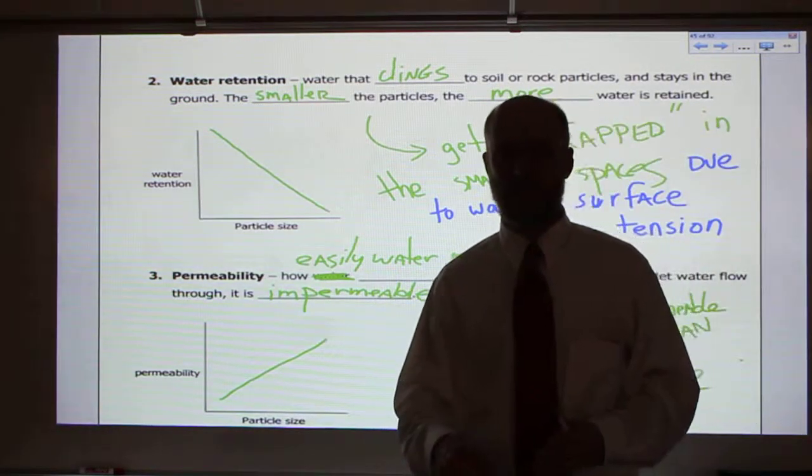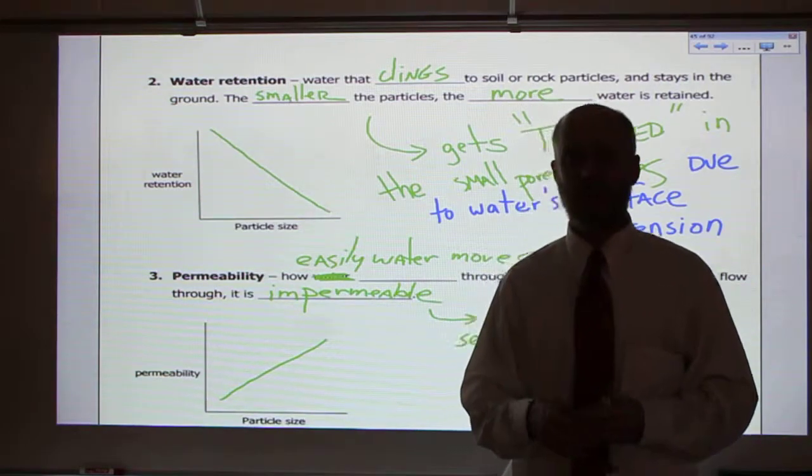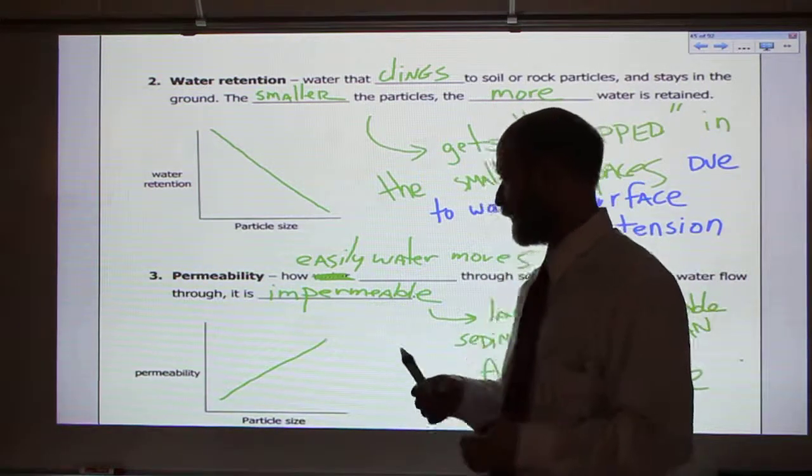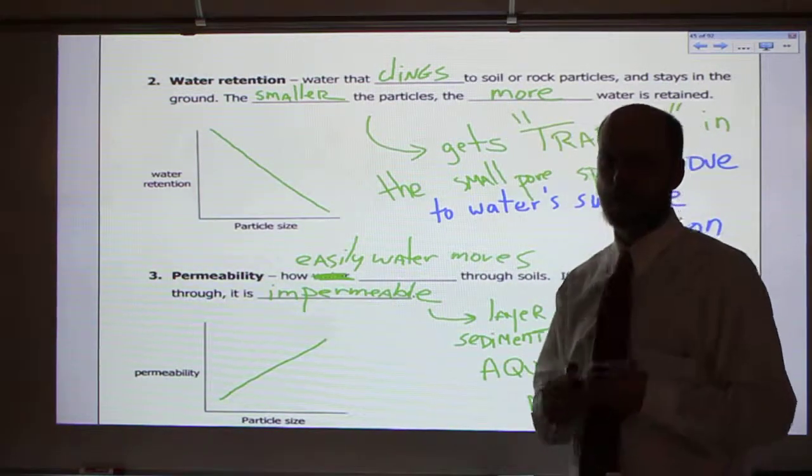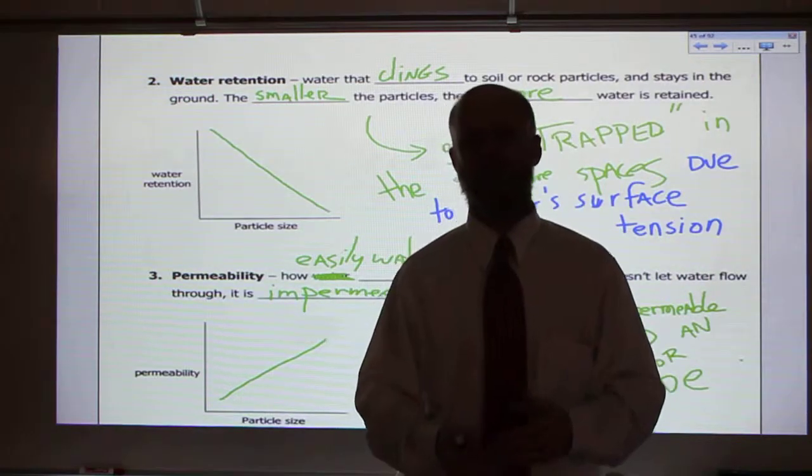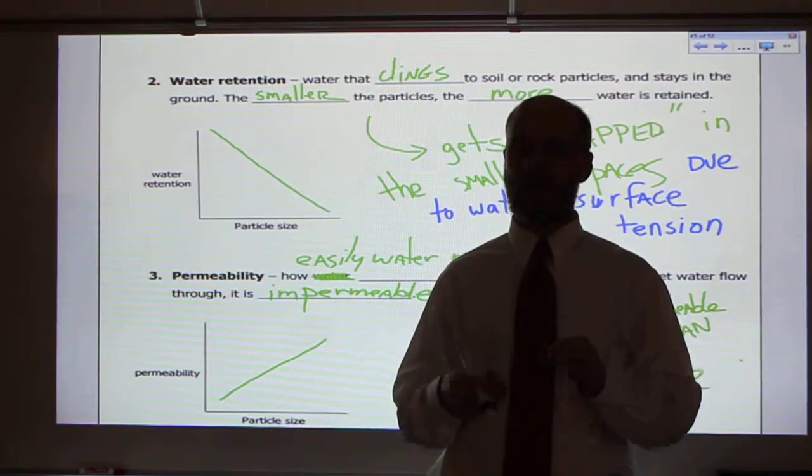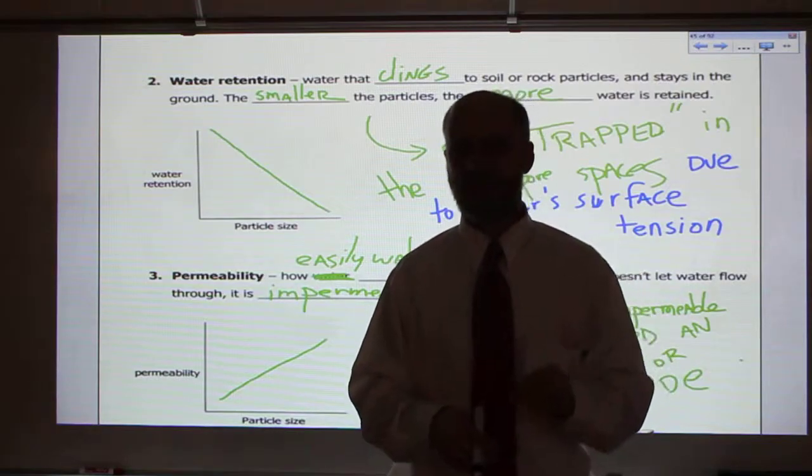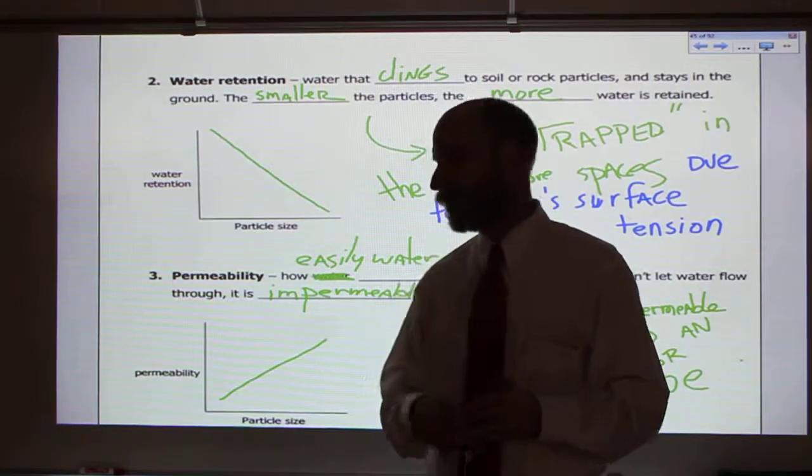If it goes through easily and fast, it is high permeability. If it goes through slow, it's low permeability. And the larger the sediment, the more permeability. Large pebbles, water goes through fast. Silt, fine, fine sand, water will go through slower.